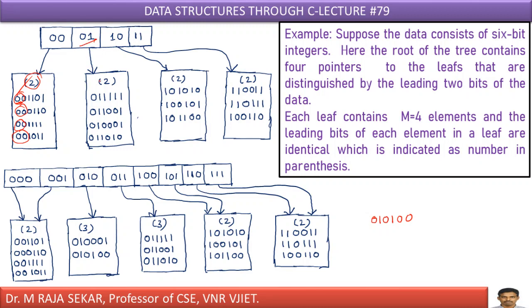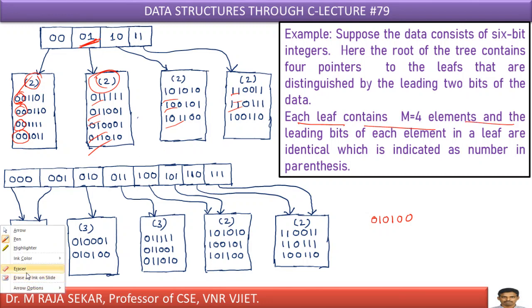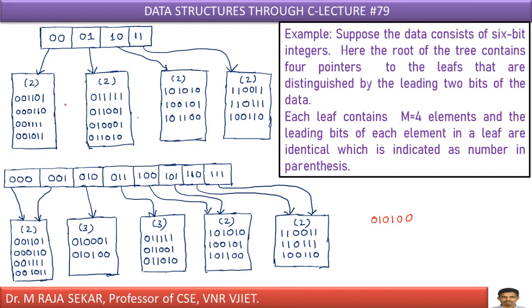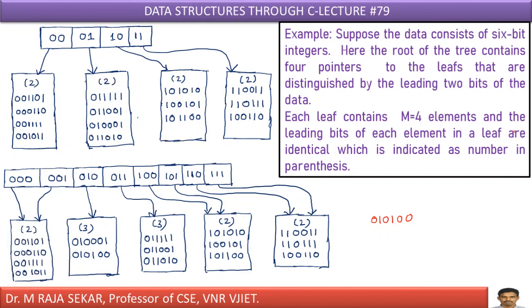What about the other leaves? Here, 01 — the leading two bits are same: 0,1. Similarly, 10 and 11. Each leaf contains m = 4 elements maximum. You cannot keep more than four elements. The first two leaves are already full; you cannot insert a new element there. The third and fourth leaves have three elements filled, so you can insert one more element in each. The leading bits of each element in a leaf are identical, which is indicated as a number in parenthesis.